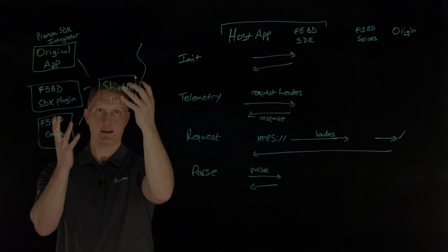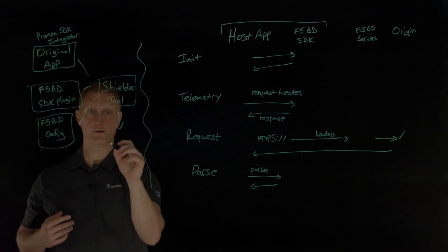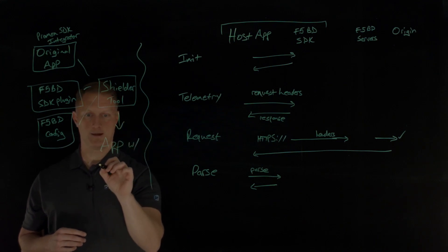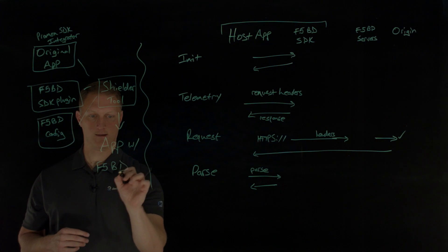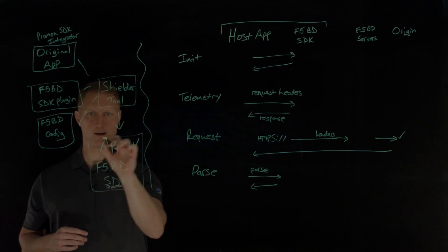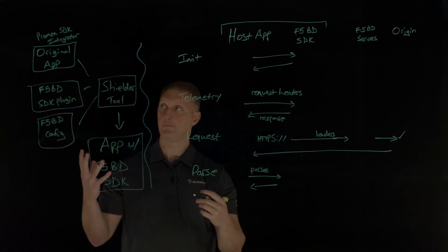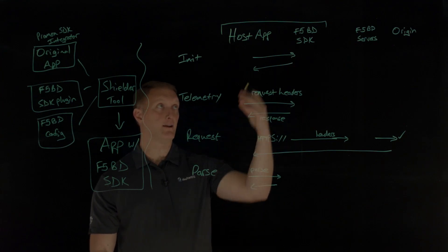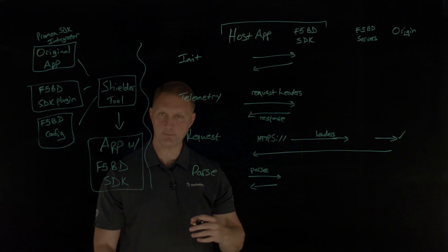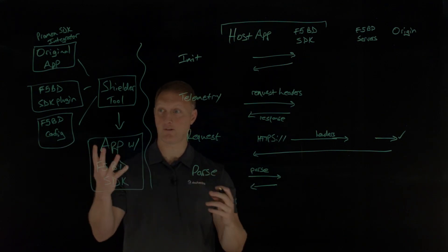So when all of these are fed into the Shielder tool, at the end of that, instead of the original app, you have the app with the F5 bot defense SDK integrated into it. We've leveraged the Promon tools to integrate the F5 bot defense SDK into the original app. At this point you get a new secured app, easily and quickly, just in a matter of minutes.